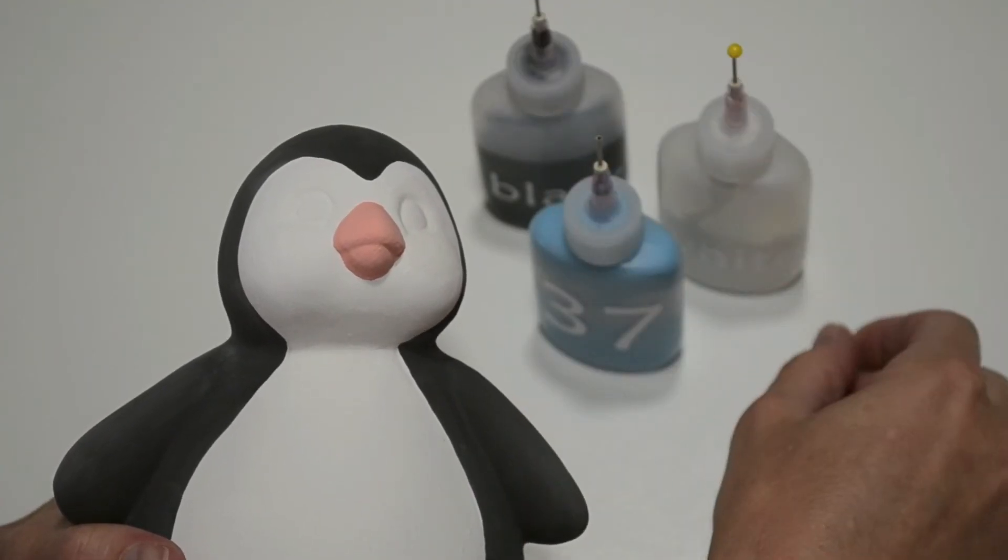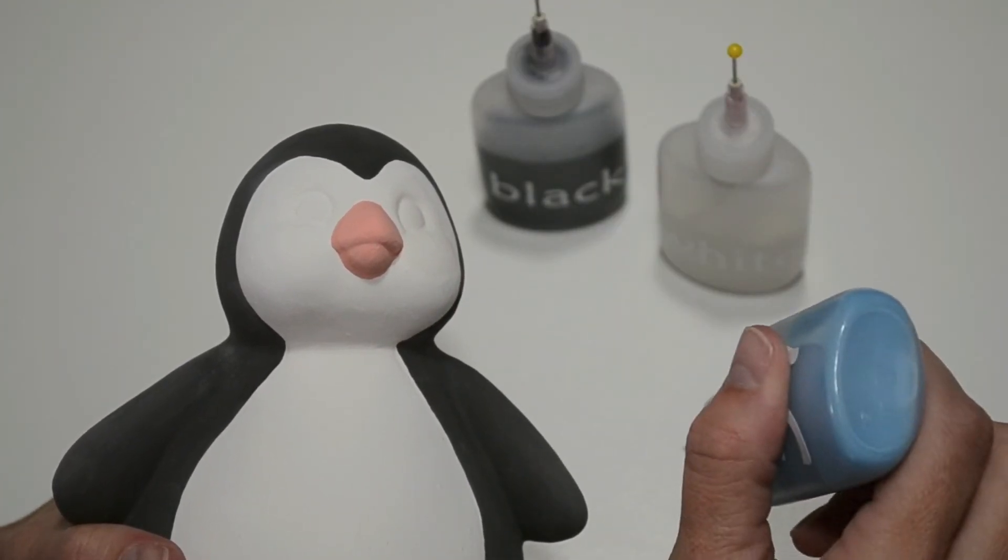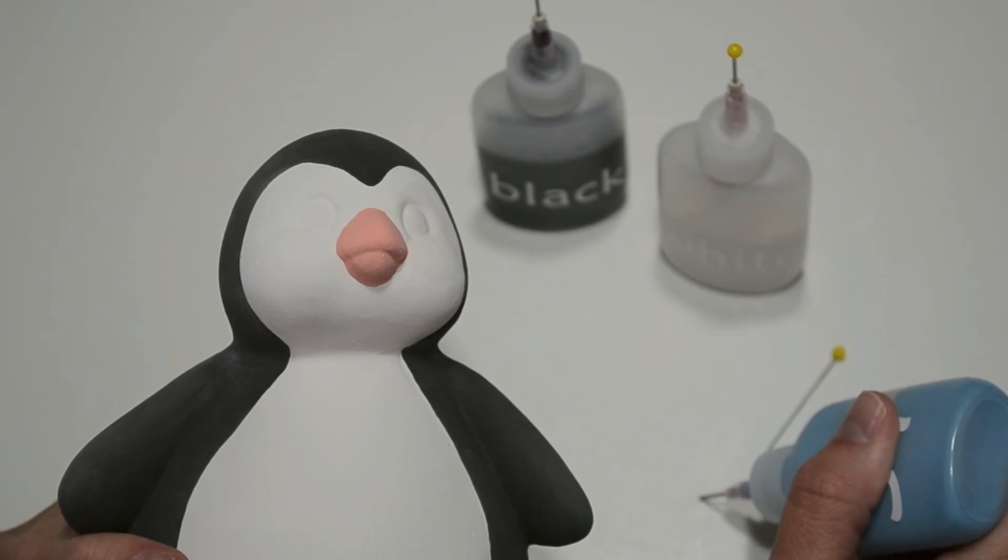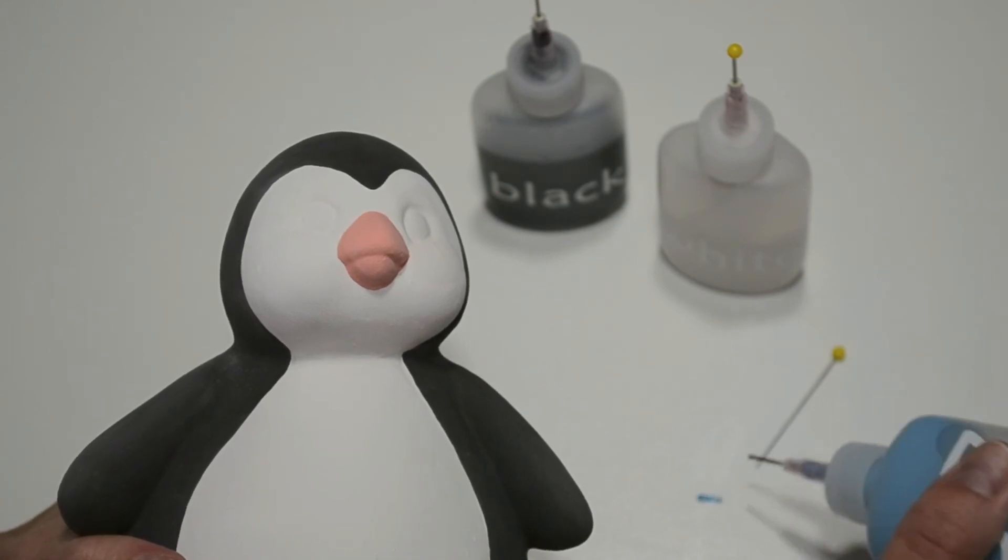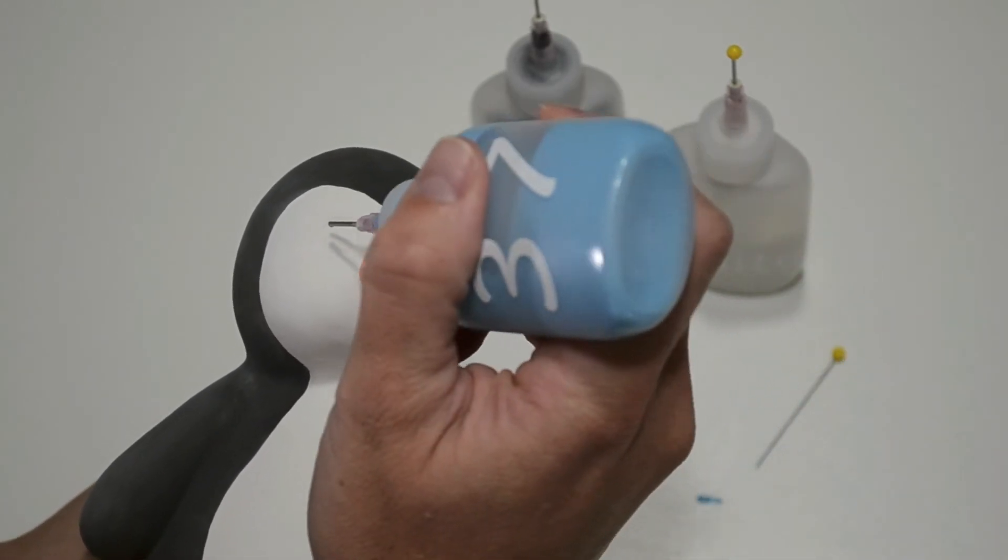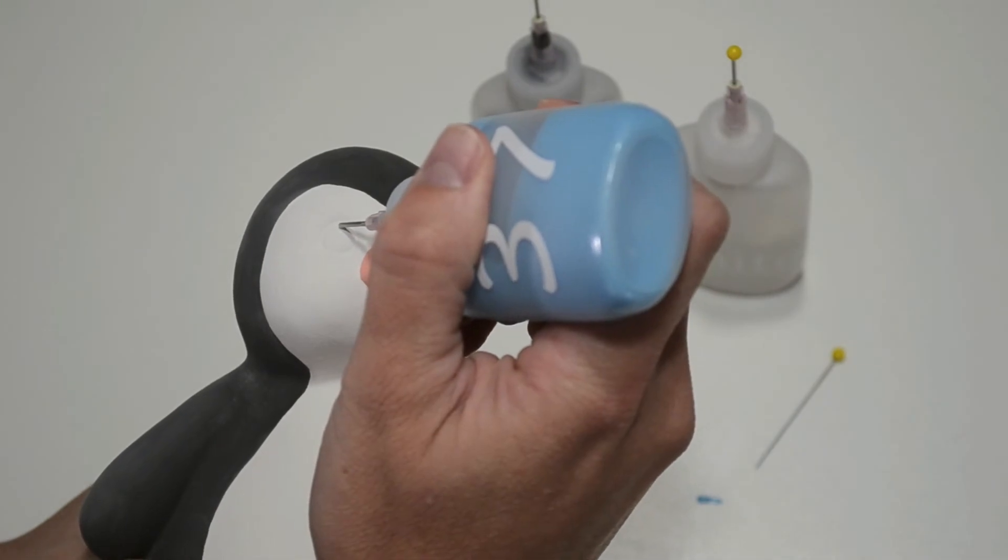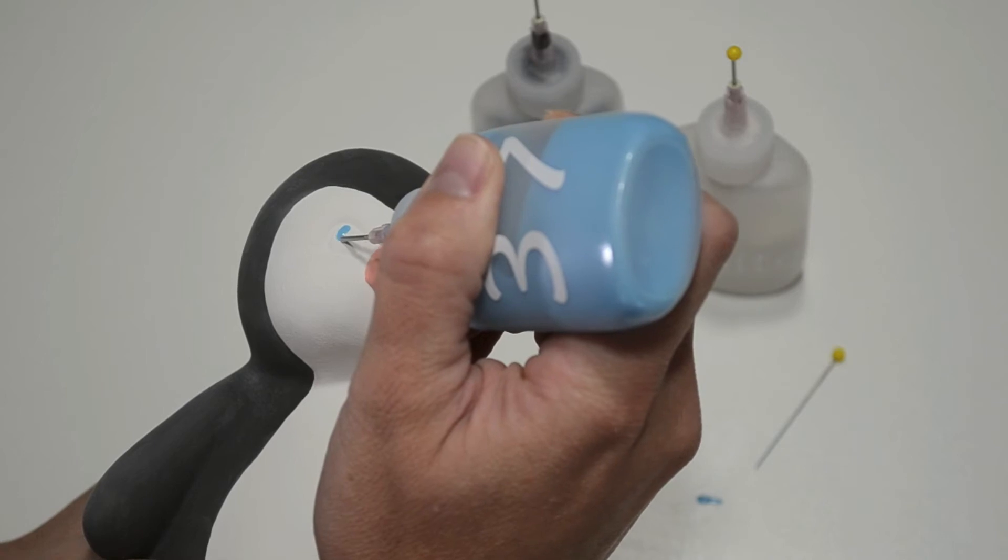Alright, let's give this penguin a personality by painting its eyes. For eyes, I prefer to use fun writers since you only need to go over them once for a solid finish. You can always use a small brush, but make sure you use three coats of paint for a solid finish.